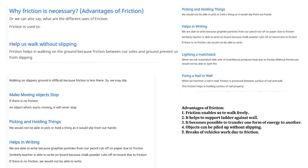Advantages and Disadvantages of Friction. Advantages of Friction: 1. Friction enables us to walk freely. 2. It helps to support the ladder against the wall. 3. It becomes possible to transfer one form of energy to another. 4. Objects can be piled up without slipping. 5. Brakes of vehicles work due to friction.